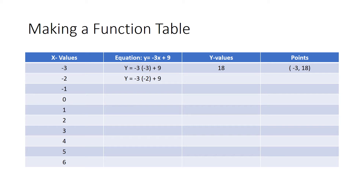For the second row I plug in the value negative two. Y equals negative three times negative two plus nine. I type that into the calculator and it gives me an answer of 15. I then write the x value and the answer in the points column: negative two, 15.